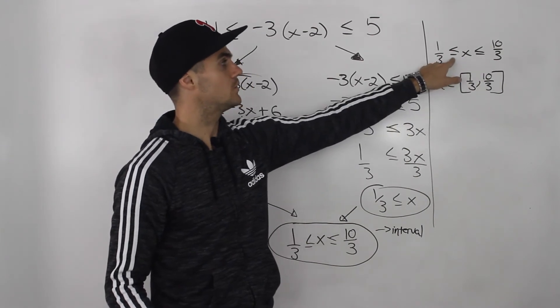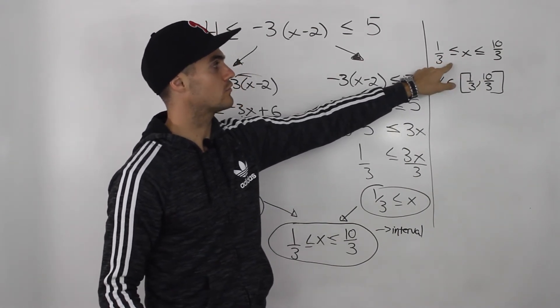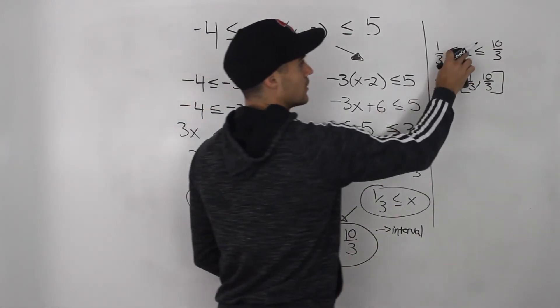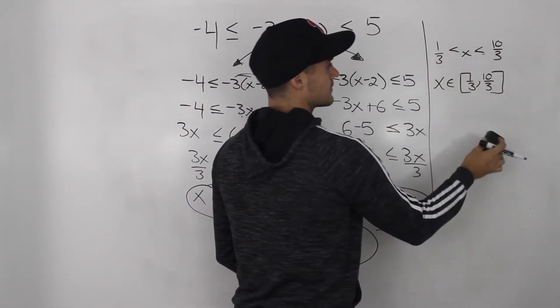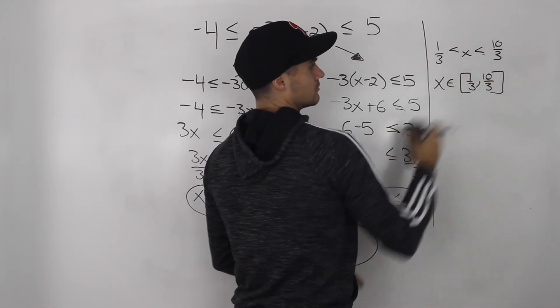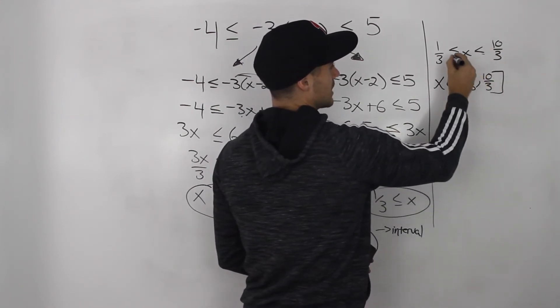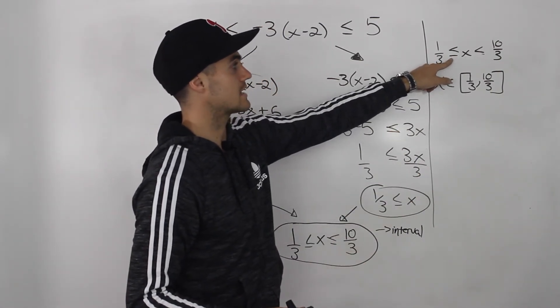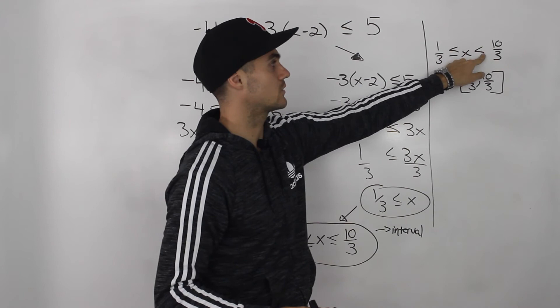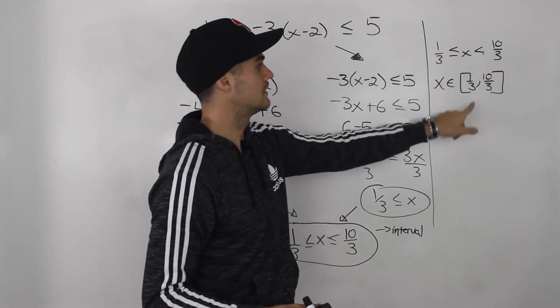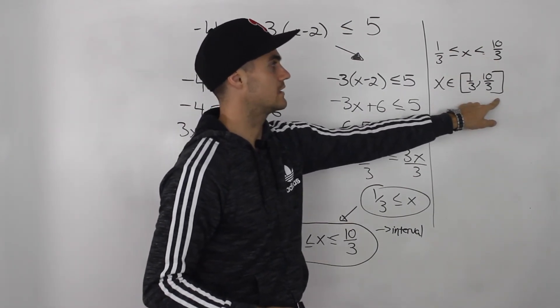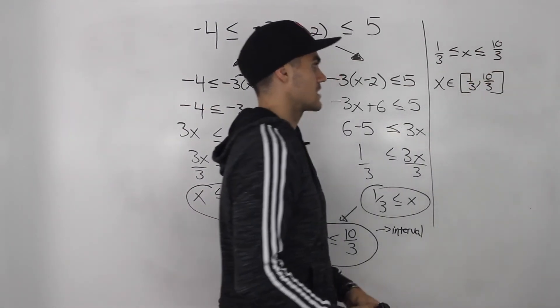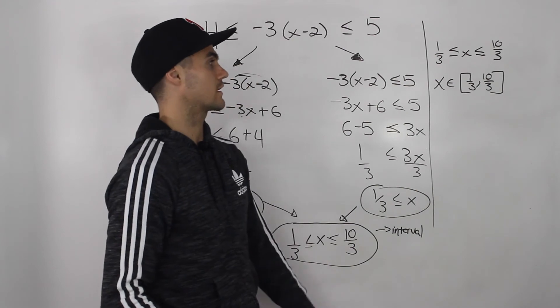If there were no equal signs, so if it was just x is greater than 1 over 3 but less than 10 over 3, so there was no equal sign like that, then these would be circle brackets. Or sometimes you may even get inequalities where one is a greater than or equal to sign and then this one would just be a less than sign. That means this would be a square bracket, this would be a circle bracket. But since both of them have that equal sign, both are square brackets.